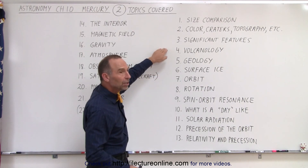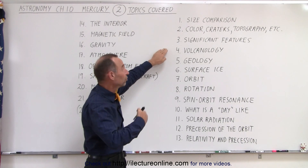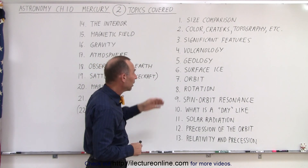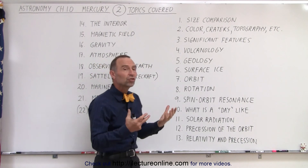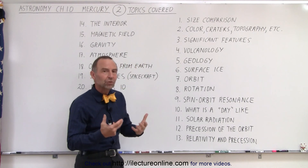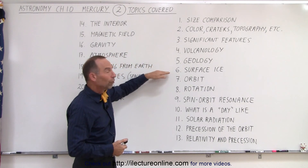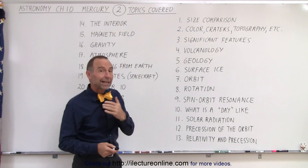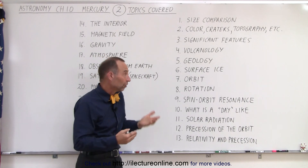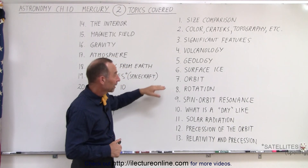The volcanology — is there still volcanic activity? Was there in the past? Is there today? So we'll talk about that. The geology, the structure, the kind of minerals that we're going to find on the planet. The surface ice — some planets do have ice on the surface. Does Mercury have surface ice? Well, we're going to find out.